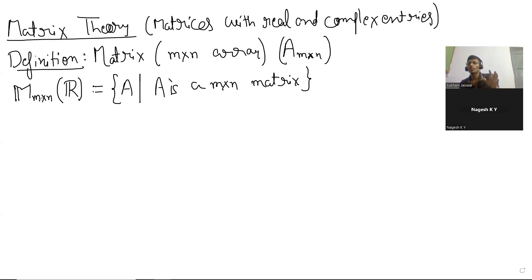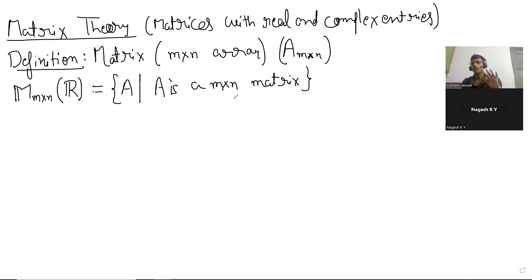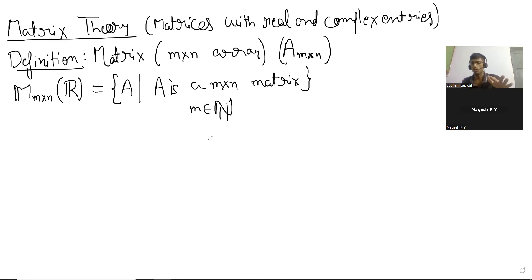So Nagesh, is this clear to you — the collection of all M×N matrices we are considering, that entire collection? Different kinds of matrices simply means they have different entries, but they are all M×N — so M and N are fixed, we are not changing them. Same order. That is fixed. So that's the appropriate family we are looking at.